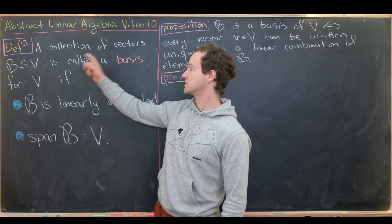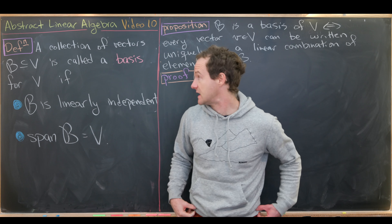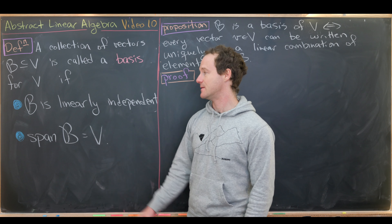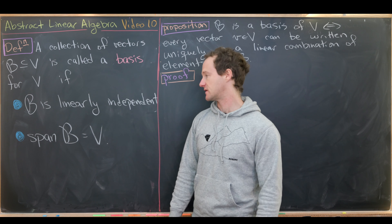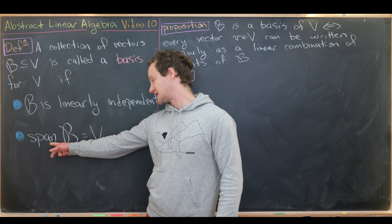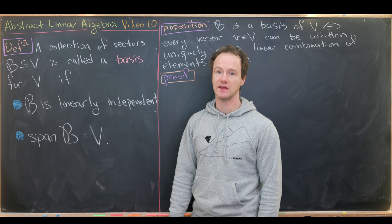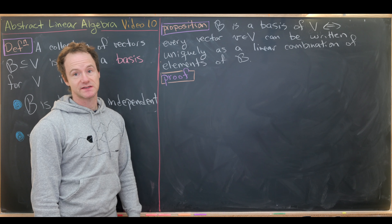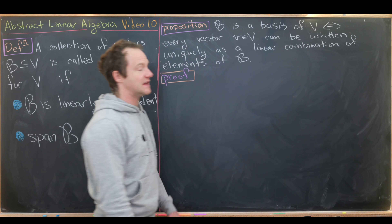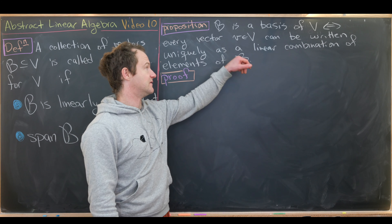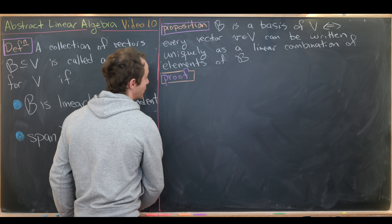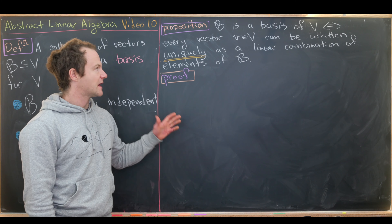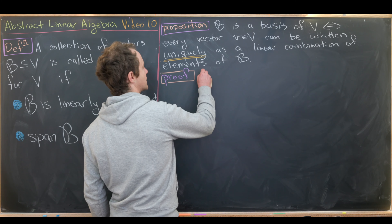Let's look at a classification theorem for a basis: B is a basis of V if and only if every vector v in V can be written uniquely as a linear combination of elements in B. The uniqueness is a key point. This is again an if-and-only-if, so we prove two directions.